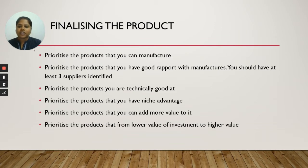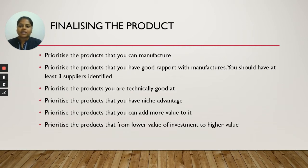If you cannot manufacture or produce by yourself, you have to list the products on the basis of good suppliers identified. At least you should have identified three suppliers. List based on the number of suppliers, as they will help you at the time of need by giving you the product.